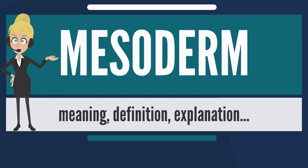Furthermore, mesoderm has the capability to induce the growth of other structures, such as the neural plate, the precursor to the nervous system. The mesoderm is one of the three germinal layers that appears in the third week of embryonic development, and it is formed through a process called gastrulation.